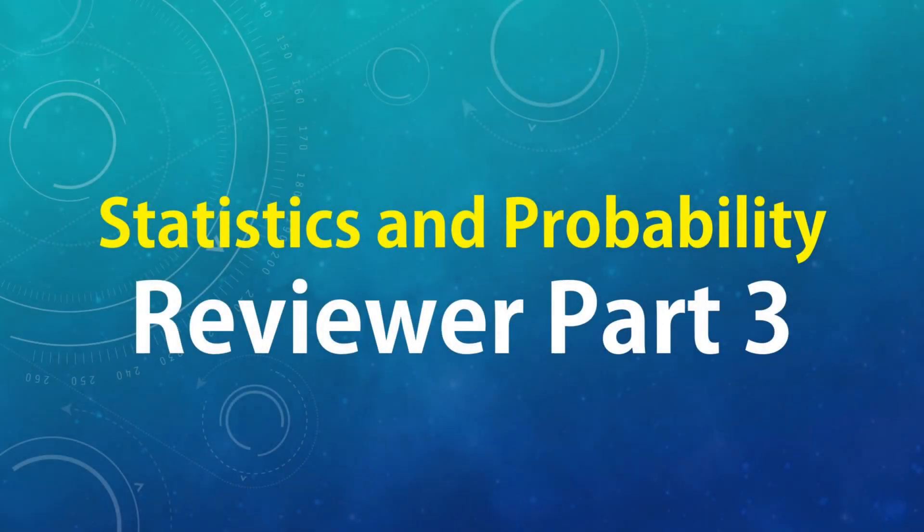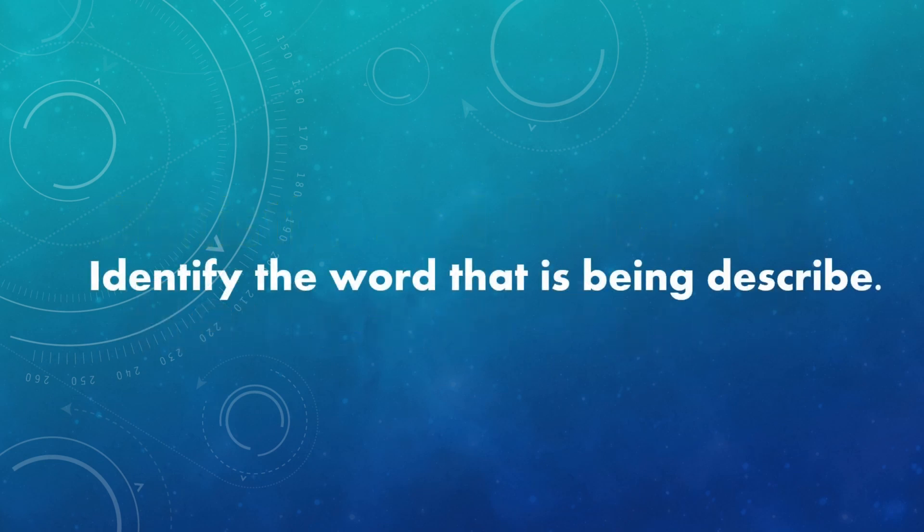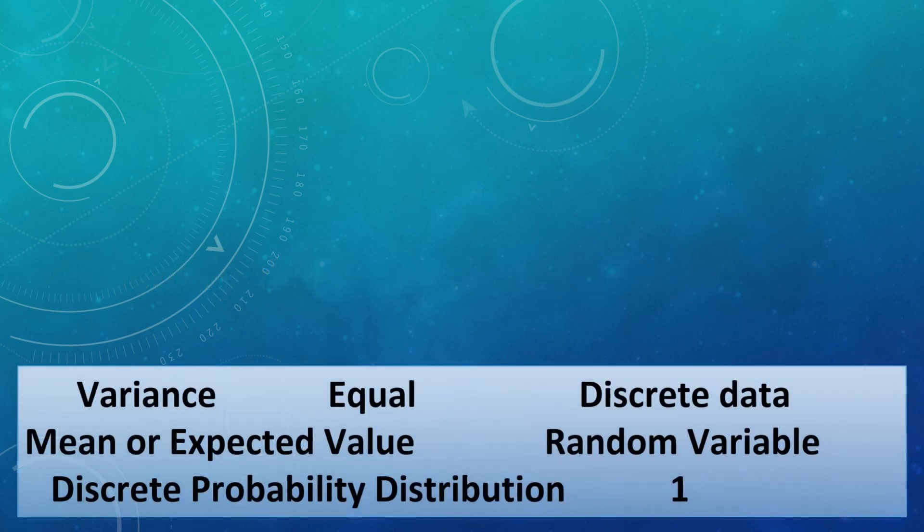Welcome to the last part of Statistics and Probability Reviewer. Identify the word that is being described of the following. You're going to use the following words: variance, equal, discrete data, mean or expected value, random variable, and discrete probability distribution.